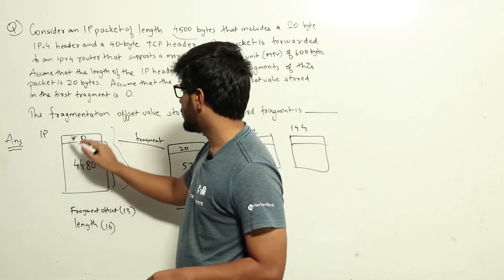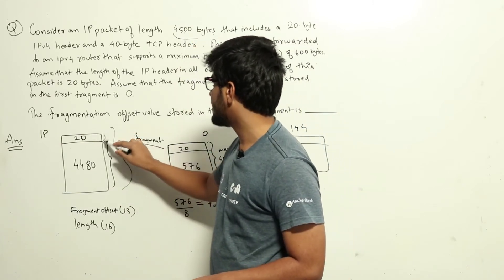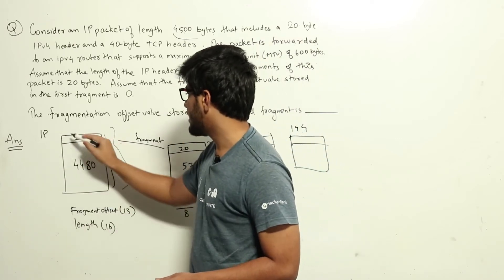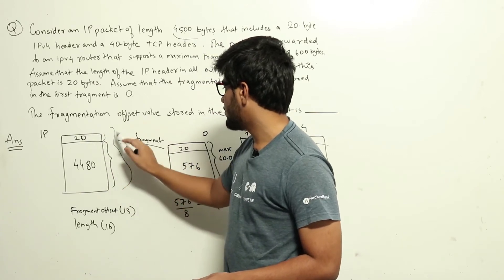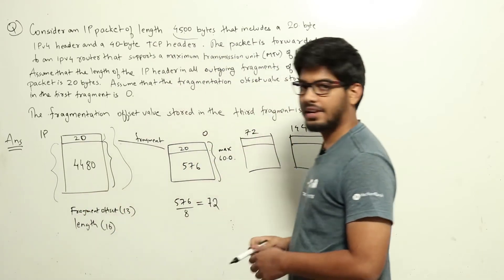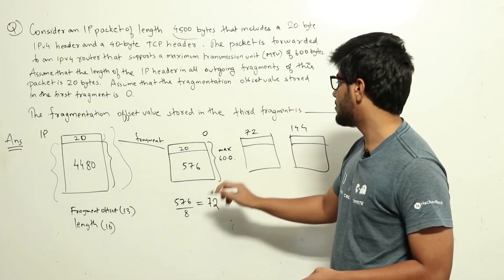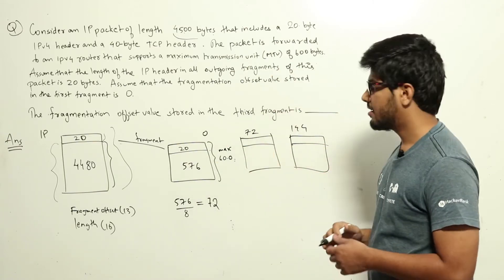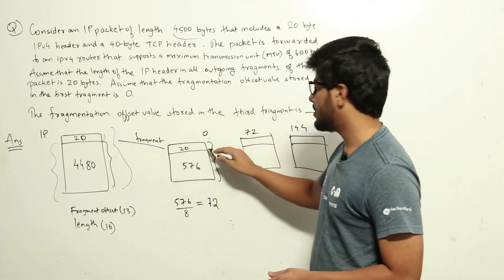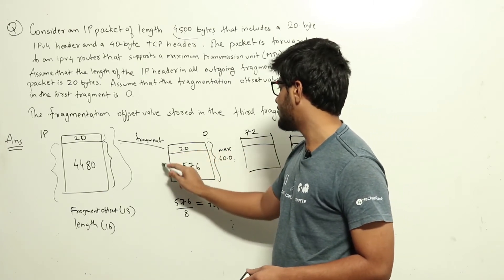The IP datagram has a total length of 4500 bytes. The IP header is 20 bytes, and while a TCP header is also mentioned, from the IP perspective the data part is 4500 minus 20, which is 4480 bytes — this is the TCP segment length. We need to divide this into smaller packets with a maximum length of 600 bytes each. Each fragment needs its own 20-byte IP header, so the maximum data per fragment is 580 bytes.